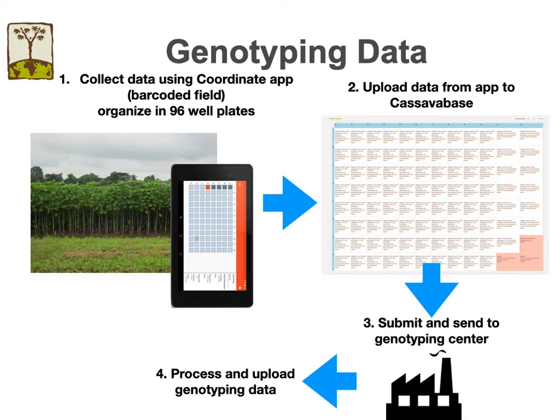CassavaBase implements a full genotyping database for low-to-high-density genotyping methods such as Intertek, DartSeq, and GBS. It is extremely important to collect the data using standard operating procedures, such that genotyped samples can be matched with accessions and samples in the database. The SOPs rely on the coordinate app, which is used to collect sample data in the field and group them into 96-well plates. This information is then uploaded to CassavaBase, from where it can be submitted to the sequencing centers. The resulting genotypes can then be processed and uploaded as well, and used for analysis such as SolGS in CassavaBase.